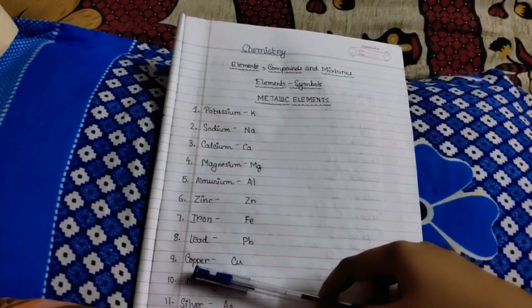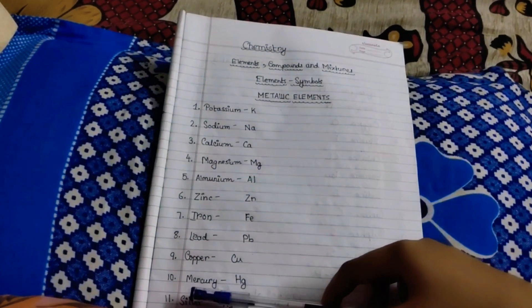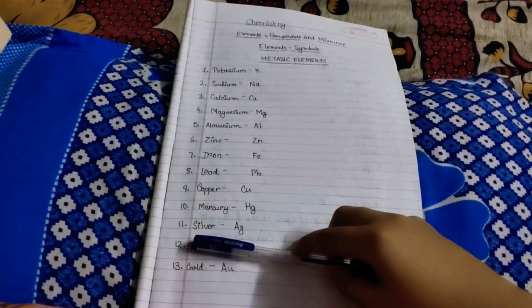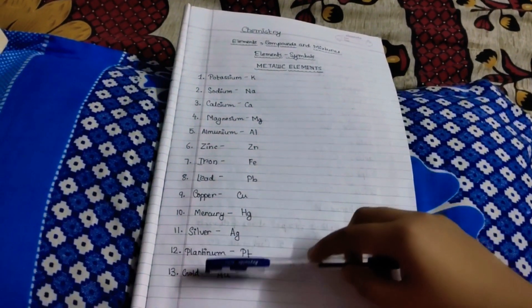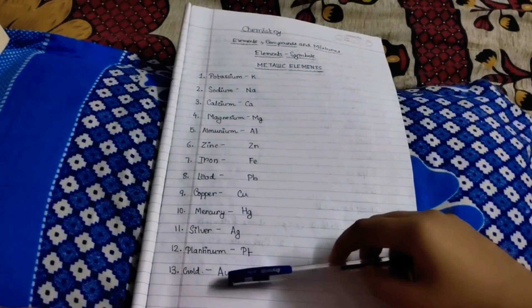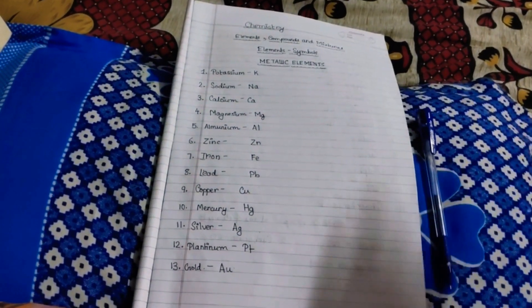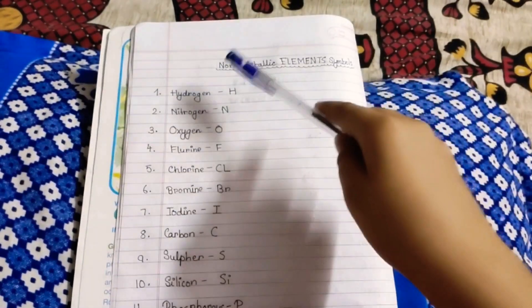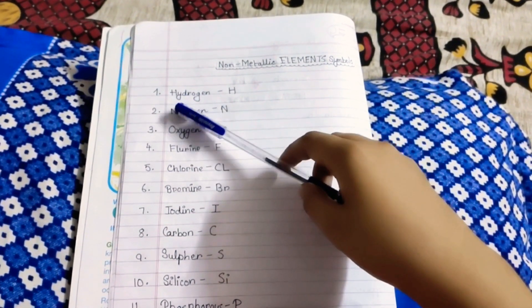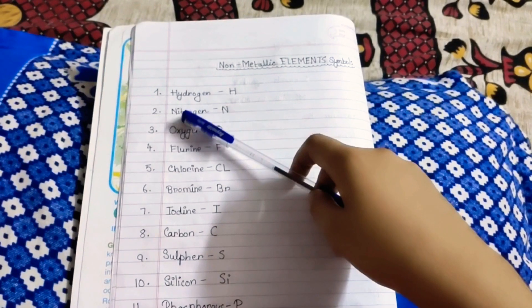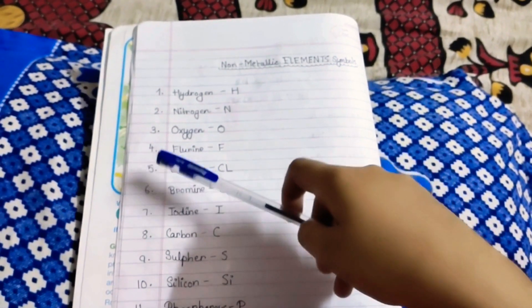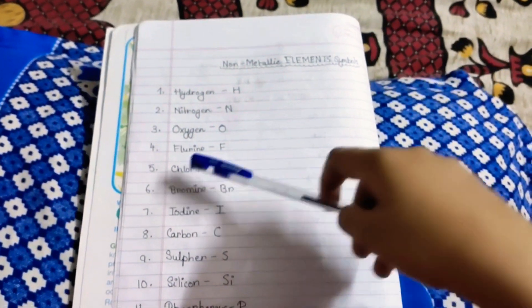Copper Cu, Mercury Hg, Silver Ag, Platinum Pt, and Gold Au. Now these are all the metallic elements and their symbols. Now let us know about the non-metallic elements symbols. Number one, Hydrogen H. Two, Nitrogen N. Oxygen O, Fluorine F, Chlorine Cl.